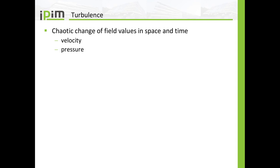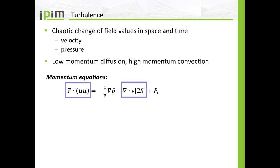Now let's come to turbulence. What is turbulence? Turbulence is the chaotic change of field values like velocity or pressure in space and time — nothing more and nothing less. You will find turbulence in flows with low momentum diffusion and high momentum convection. If we take a look at the momentum equations, this is the convection term and this is the diffusion term. If you have low momentum diffusion and high momentum convection, then the convection term is dominant.